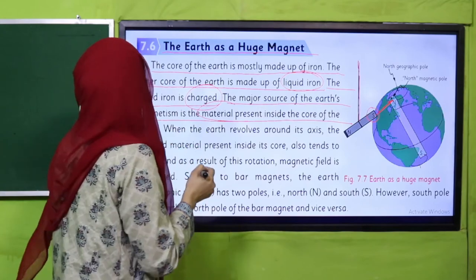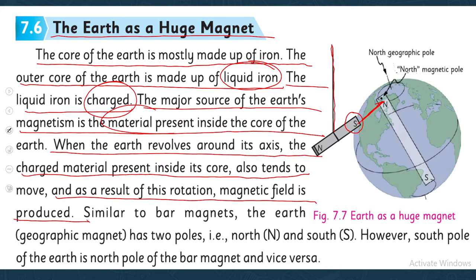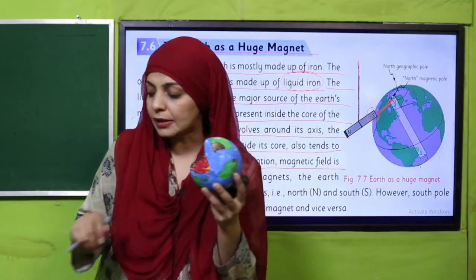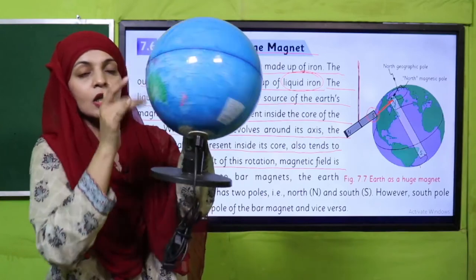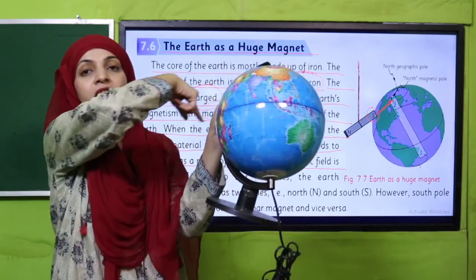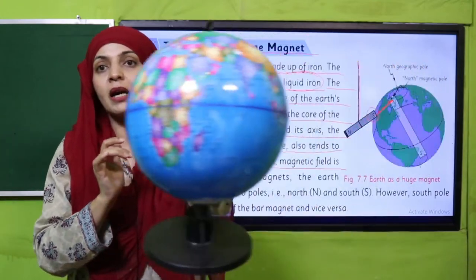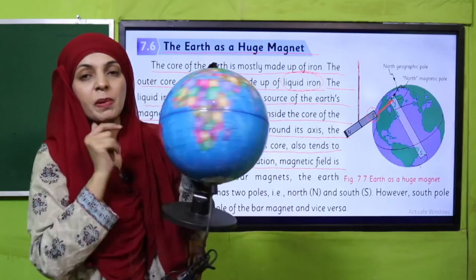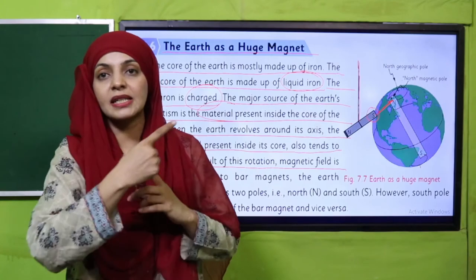When the Earth revolves — or you can say when the Earth spins on its axis — the charged material present inside its core also tends to move, and as a result of this rotation, a magnetic field is produced. I'll show you with the globe: when the Earth rotates on its axis like this, the liquid iron filled inside its core moves with it. When it moves with it, it generates a magnetic field. The Earth is spinning on its own axis — this spinning on its axis is what generates the magnetic field, because the charged liquid iron inside also moves along with it.